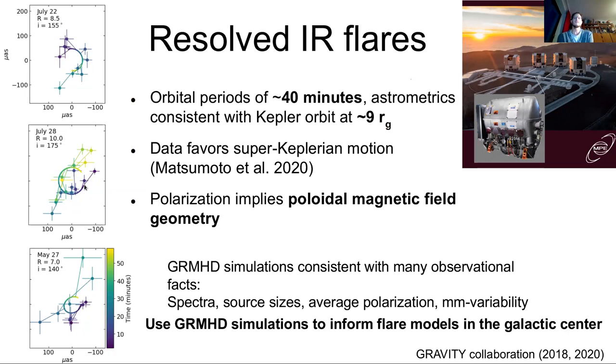So what's the point here? So we want to use GRMHD simulations to actually inform flare models and see if we can come up with what's going on in the galactic center that produces this phenomenology. We're doing already pretty well with GRMHD simulations so we can match spectra to a good extent. The source sizes and the average polarization degree and even the millimeter variability where you have a kind of bubbling accretion variability of around 50%.